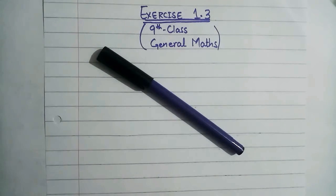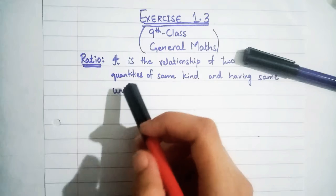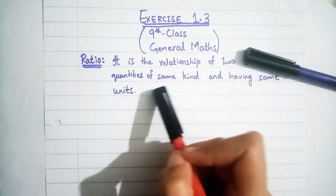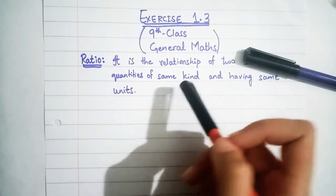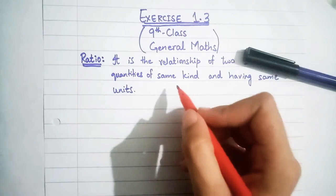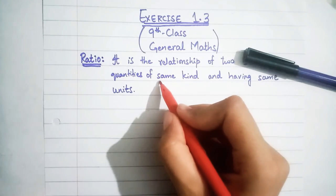Ratio is the relationship of two quantities of the same kind and having the same units. 'Same kind' means that the quantities you are comparing must be of the same type.